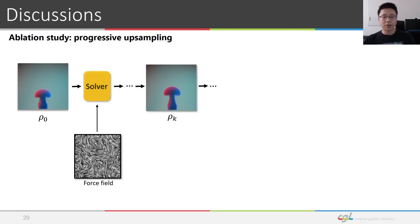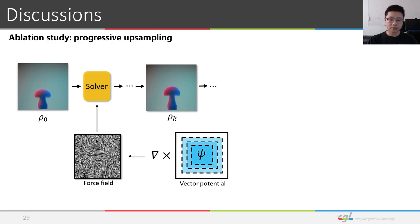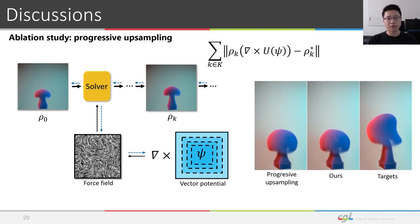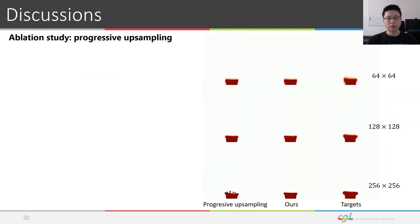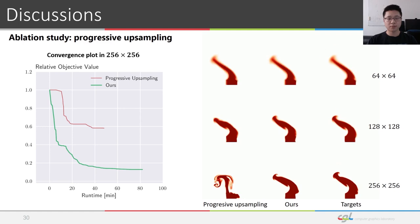We also performed an ablation study on our low-frequency-first strategy. Kolmogorov inspired frequency decomposition of the vector potentials is one way to implement low-frequency-first strategy. We implement another low-frequency-first strategy by progressively upsampling the vector potentials as optimization progresses. Both reduction strategies can work better than standard methods. But ours converge faster and to a better local minima in some of the examples than the progressive upsampling strategy.